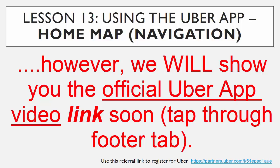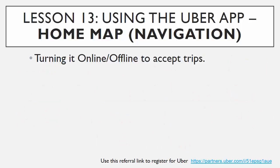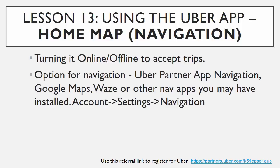The home app itself has navigation and allows you to turn it on and off to accept trips. There are more options for navigation. Uber has its own partner navigation function, but you can also use other navigation apps with the Uber app — Google Maps, Waze, and any other nav apps you may have installed. Just go to Account, Settings, Navigation, and select your preferred navigation app.